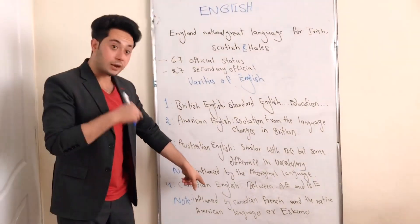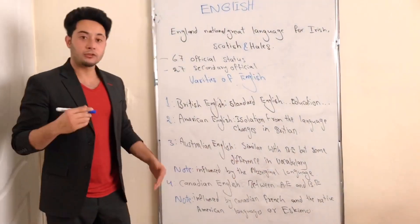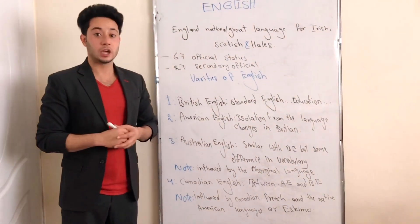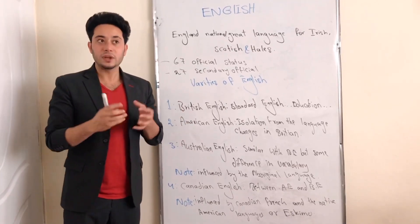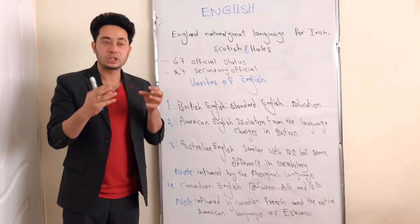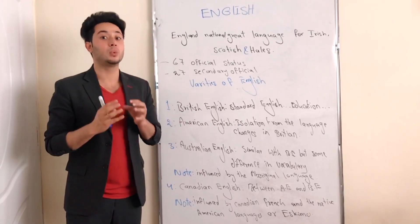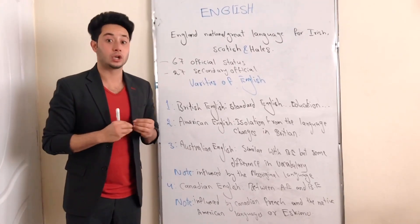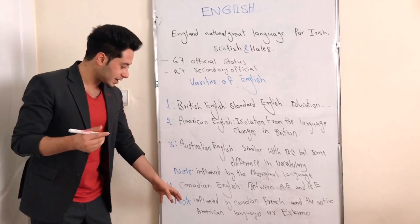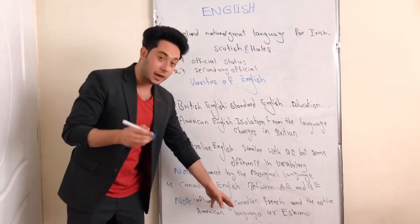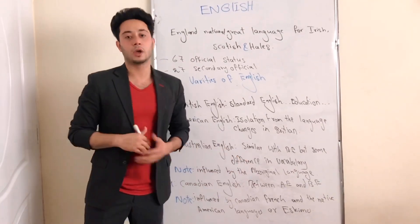Australian English is also considered to be influenced by the Aboriginal language. The fourth type of English is Canadian English. It is a type of English language which is between American English and British English, and it is also considered to be influenced by Canadian French and the native American language, or Eskimos.